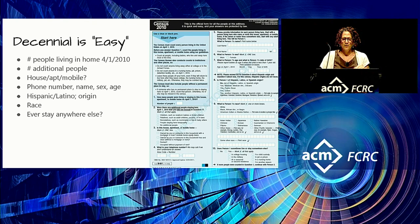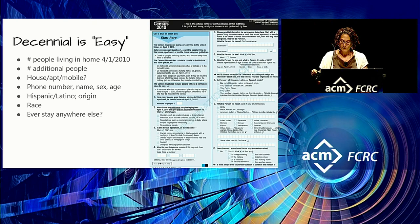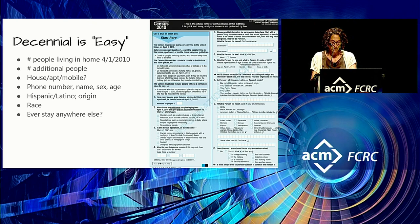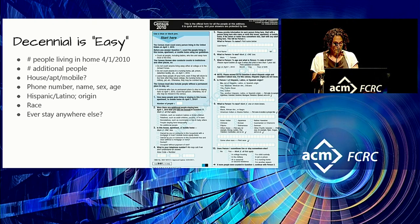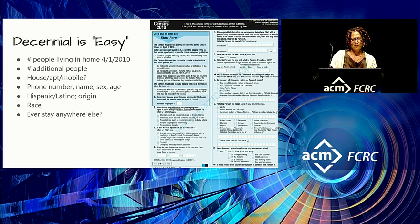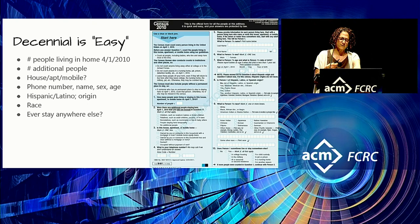The American Community Survey is much more detailed, asking about housing, ancestry, journey to work, computer and internet use, disability, employment, family relationships, fertility, food stamps, grandparents as caregivers, health insurance, Hispanic origin, home heating fuel, housing costs, industry occupation and class of worker, marital status and history, ownership, home value and rent, place of birth and citizenship, plumbing, school enrollment, sex, vehicles available, veteran status, year built and year moved in. Privacy loss has to scale with the number of questions, making differential privacy for the ACS an extremely challenging problem.